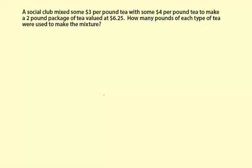A social club mixed some $3 per pound tea with some $4 per pound tea to make a two-pound package of tea valued at $6.25. How many pounds of each type of tea were used to make the mixture?